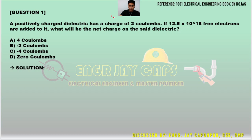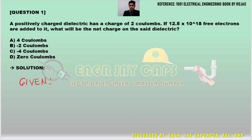We will try to speak Taglish so everyone will understand. Based on our solution process, let us break down all the givens. The positively charged — let us call it Q1 — so Q1 equals 2 coulombs.